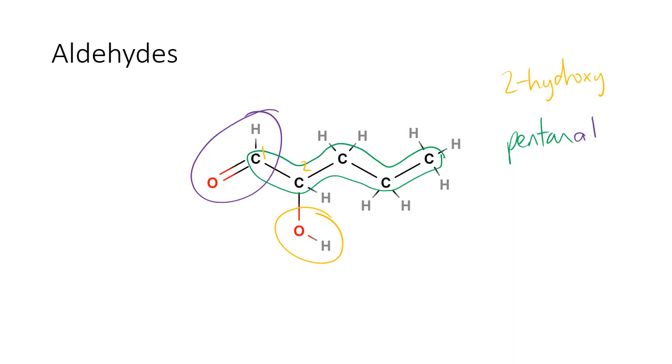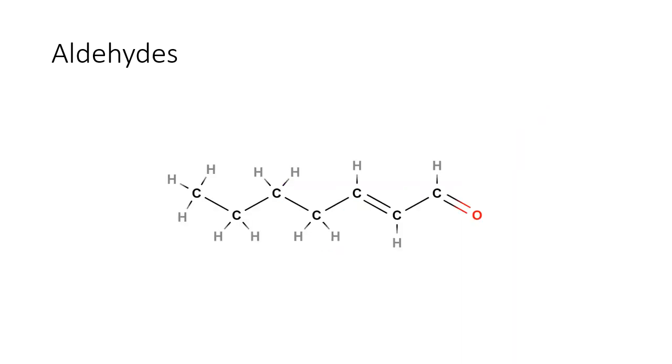And then finally, this one here. Now this has got your aldehyde group, nice and easy, but oh look, something special: it's got a double bond in it. Now if you remember, the aldehyde group gets priority over the double bond in terms of numbering. So the aldehyde group means that that one is the number one. It's seven long, so it's a hept.